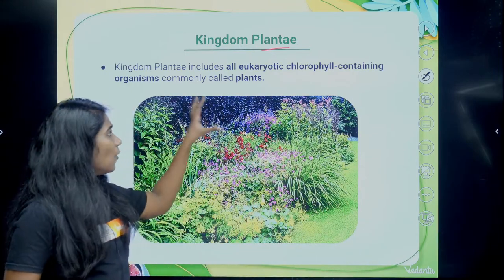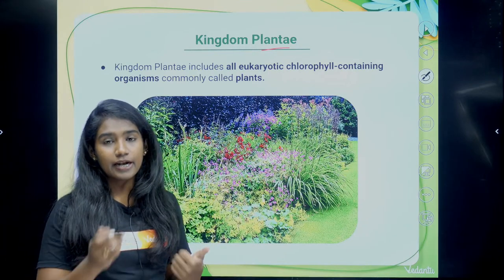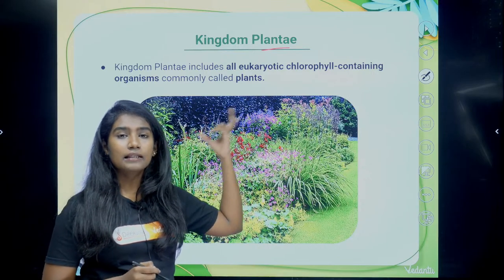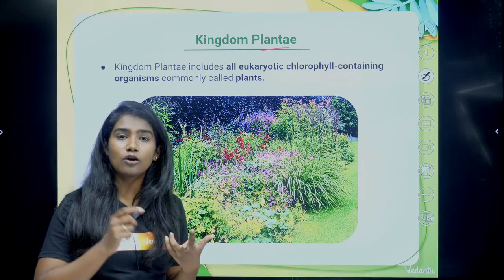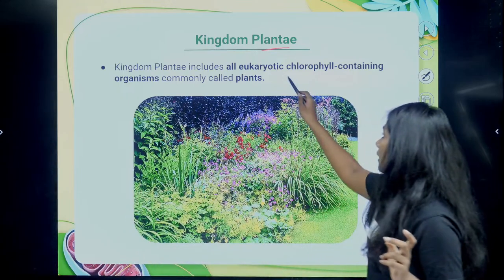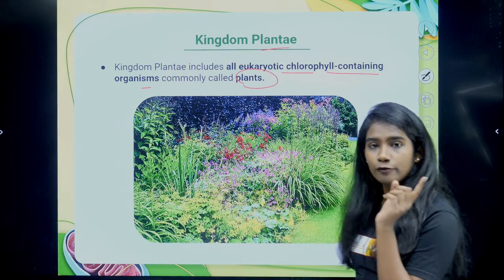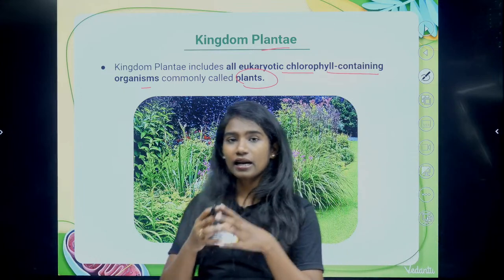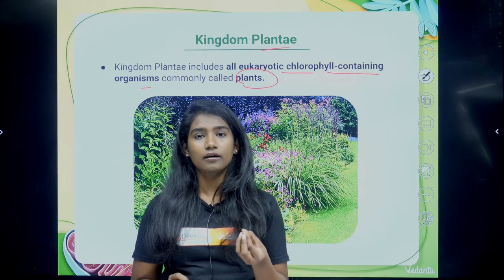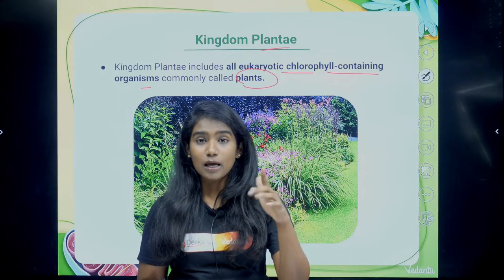In kingdom Plantae, all living organisms have eukaryotic cells, are multicellular, and their mode of nutrition is autotrophic. Plant cells have cell walls. These are eukaryotic, chlorophyll-containing organisms commonly called plants. Under autotrophs there are two types: photoautotrophs, which derive energy from sunlight, and chemoautotrophs, which derive energy from chemical reactions.